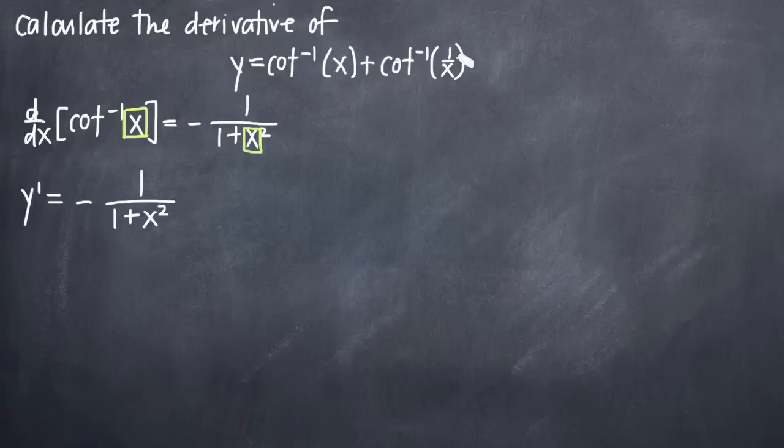For arc cotangent of 1 divided by x, we'll do the same thing here. We have negative 1 divided by 1 plus, but in place of x here, we'll put what we have inside of this arc cotangent function, which is 1 divided by x. So 1 divided by x, and we'll square that.